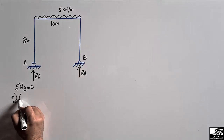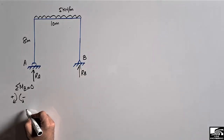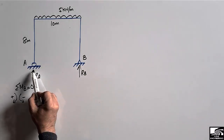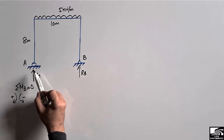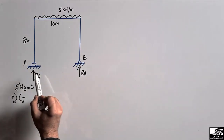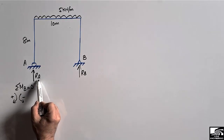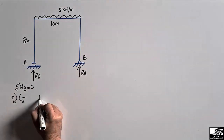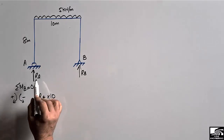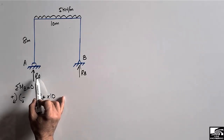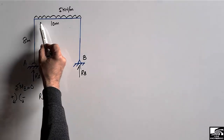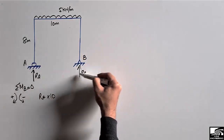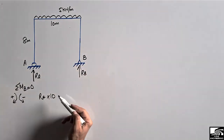We choose the clockwise moment as positive and the counterclockwise as negative. The moment at point B: R_A creates a clockwise moment about point B, so it is force multiplied by distance. R_A is the force and the moment arm is 10 meters, so we have R_A multiplied by 10. The distributed load acts downward, creating a counterclockwise moment about point B.